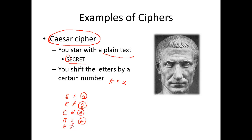For T: S, T — then U, and then V. So V is the encryption result, or ciphertext. Basically, 'secret' is encrypted into U, G, E, T, G, V. So this is a very simple encryption method or cipher — an ancient, very primitive way of doing encryption.